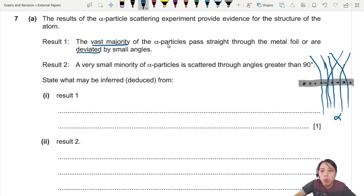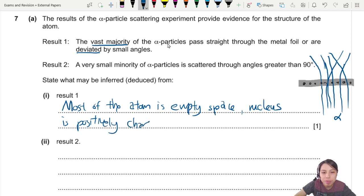So you need to talk about the charge. Why are they repelled? So you could say that most of the metal foil is empty space actually. Empty space. Because most of them just pass through. Only some of them have some effect happening to them. And you might also want to add that the nucleus is positively charged. Nucleus, just in case it's a mark. Nucleus is positively charged and it affects path of your alpha particle, which is, by the way, positively charged also.